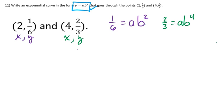The strategy is to isolate a in one equation and substitute into the other. From the first equation, I divide both sides by B squared to get a equals 1 over 6B squared. I've divided both sides by B squared — on the right side I lose the two factors of B, and on the left side I place two factors of B in the denominator.